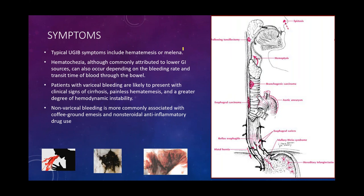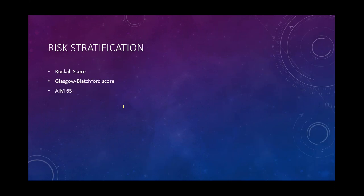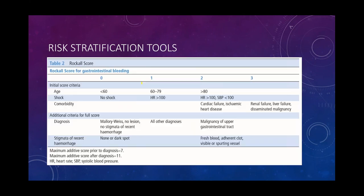Typical upper GI bleed presentations include hematemesis or melena, but patients can also present with hematochezia depending on bleeding rate and transit time. Variceal bleeding patients tend to present with clinical signs of cirrhosis, painless hematemesis, and greater hemodynamic instability. Non-variceal bleeds are more associated with coffee-ground emesis or NSAID use. GI colleagues utilize risk stratification tools: the Rockall score, the Glasgow Blatchford score, and the AIM-65 score, which help stratify patient risk before endoscopy and have mortality associations.